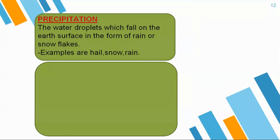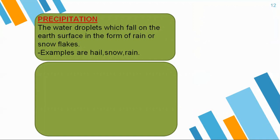Let us come to precipitation. Precipitation is the water droplets which fall on the earth in the form of rain or snowflakes. Examples are hail, snow, or rain.